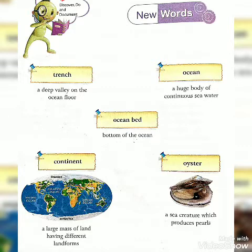Continent — a large mass of land having different landforms. Oyster — a sea creature which produces pearls.